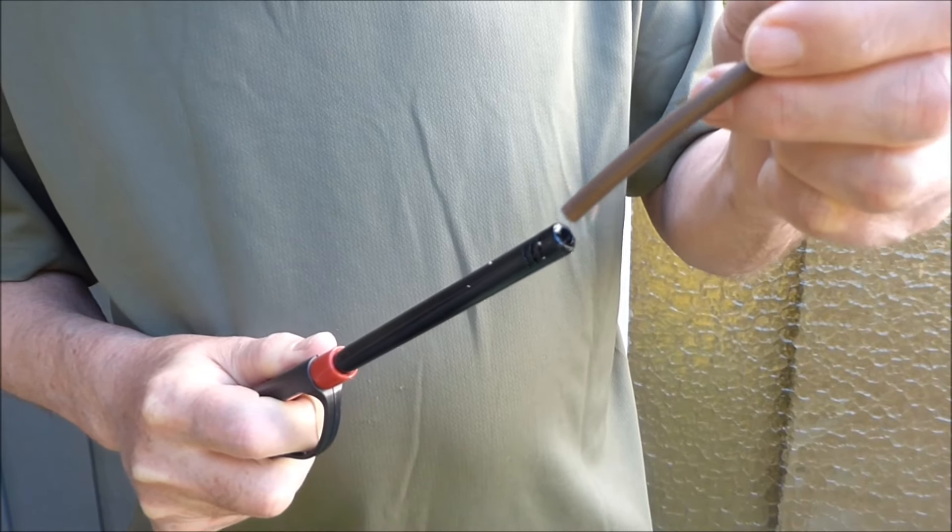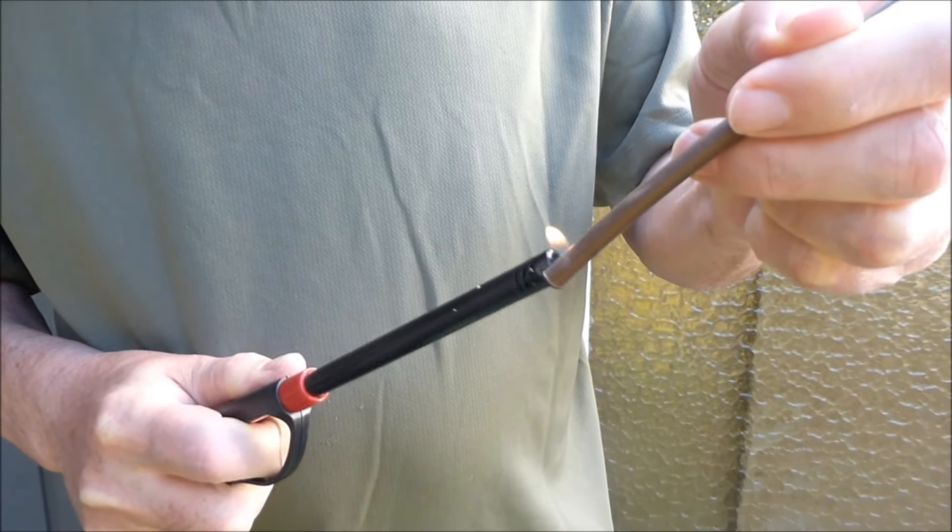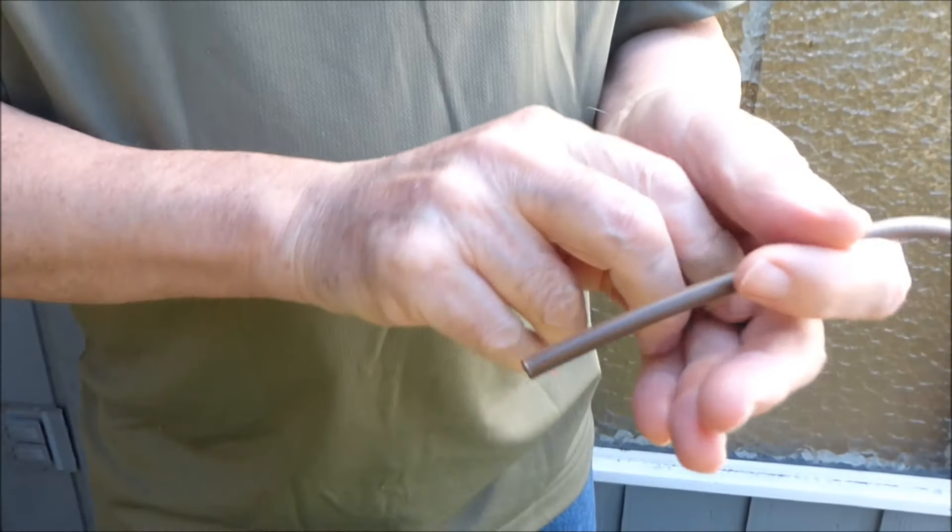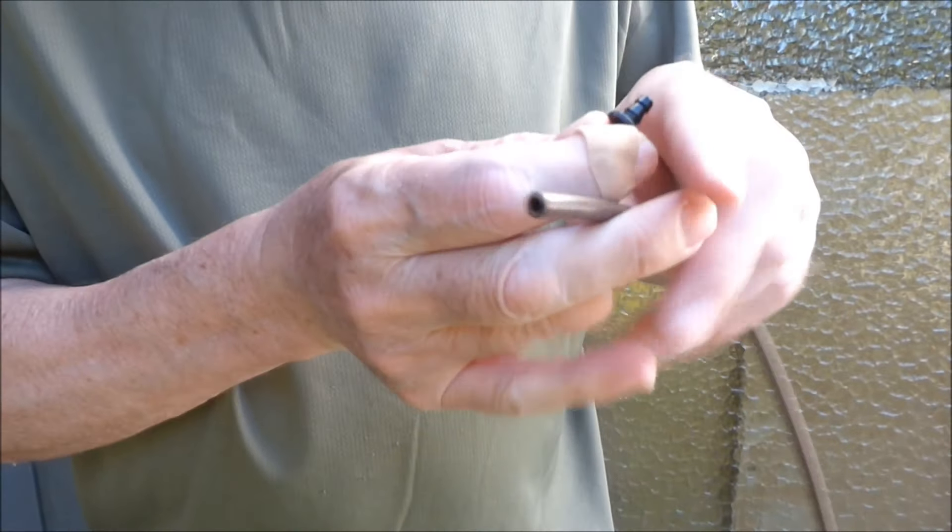A butane lighter softens the plastic tubing and makes it easier to insert the plastic connector fitting into the tubing. Do not overheat or burn the plastic tubing.